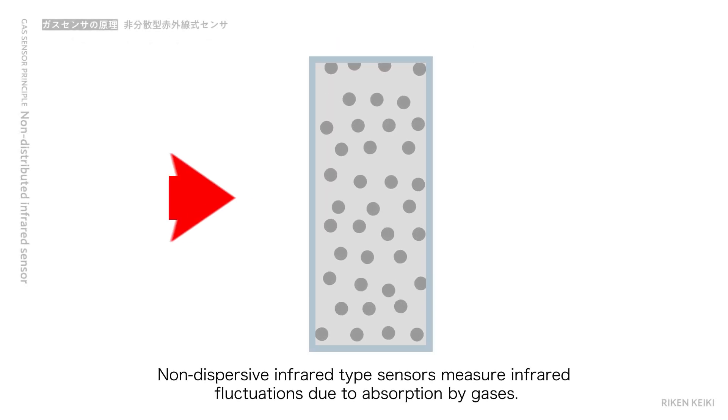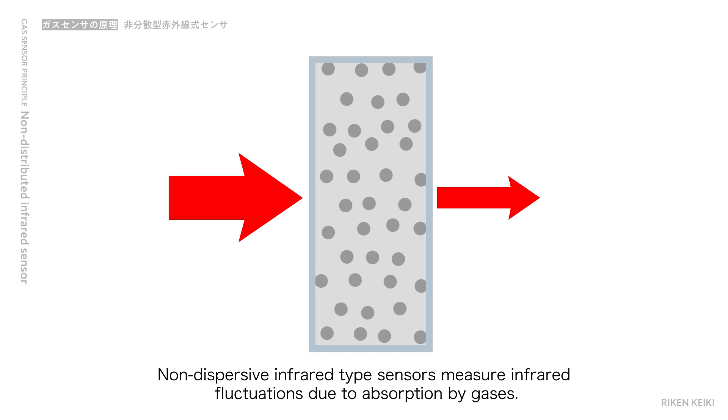Non-dispersive Infrared Type Sensors measure infrared fluctuations due to absorption by gases.